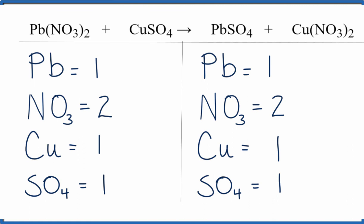This is Dr. B with the balanced equation for Pb(NO3)2 plus CuSO4 yields PbSO4 plus Cu(NO3)2. Thanks for watching.